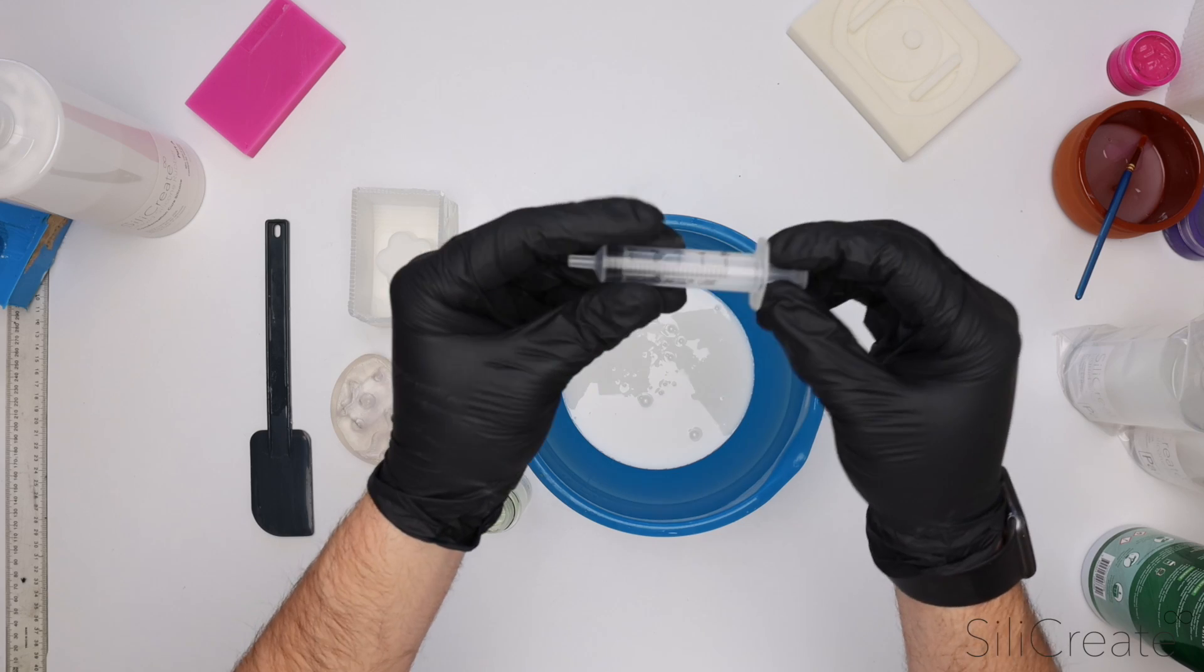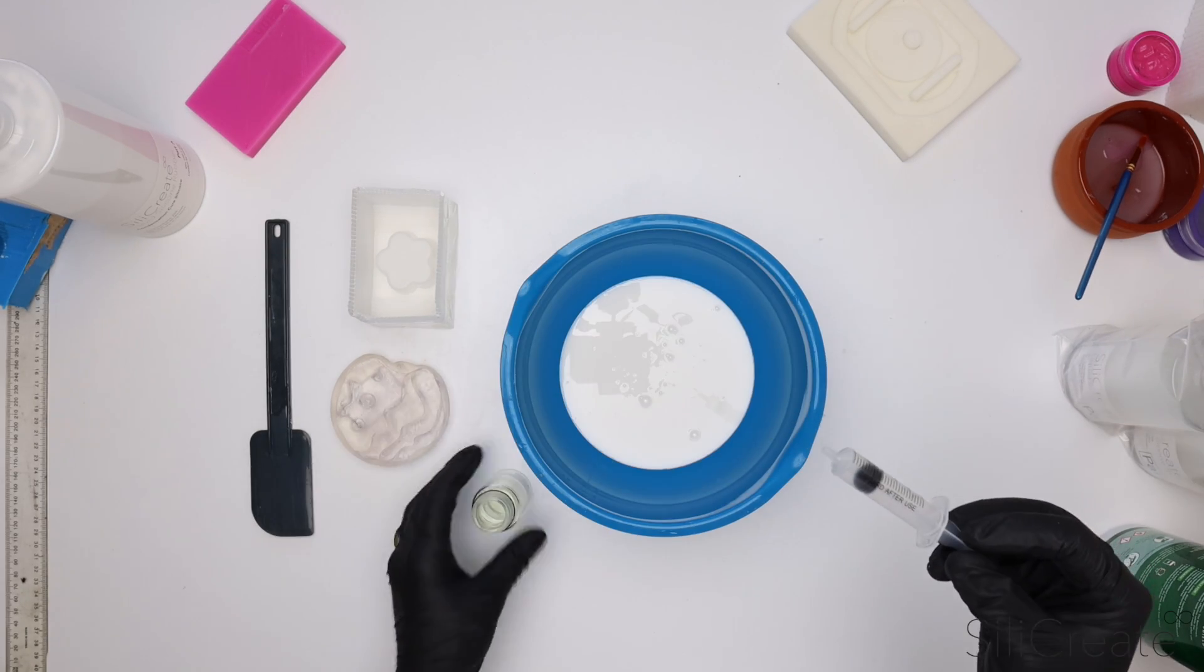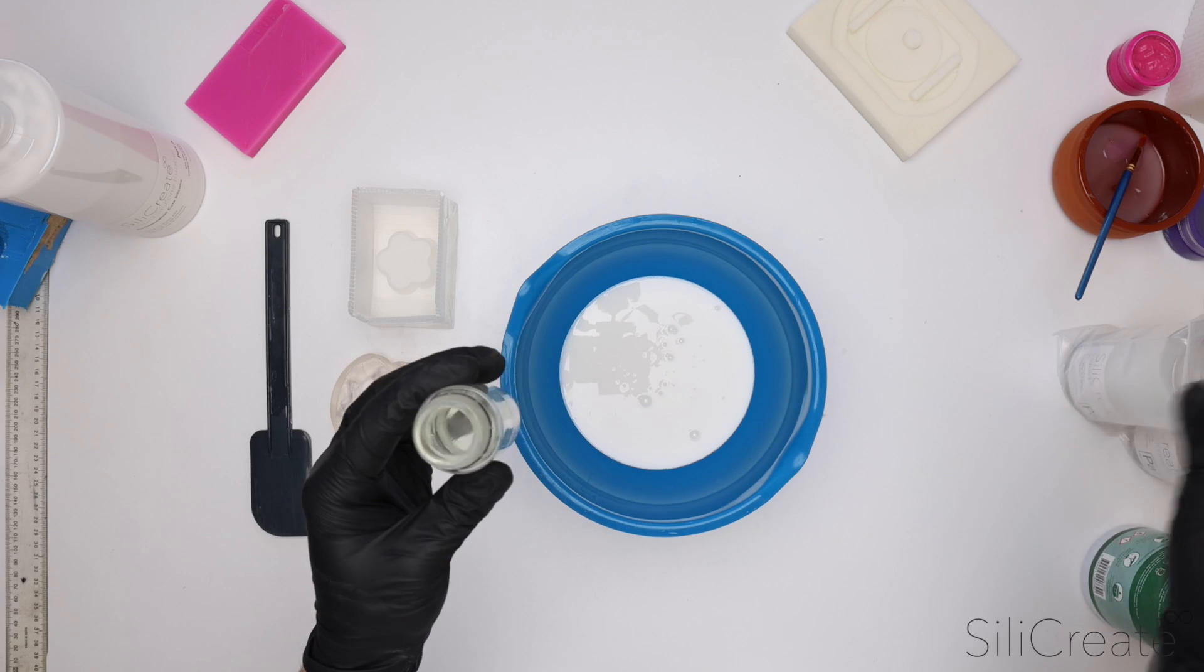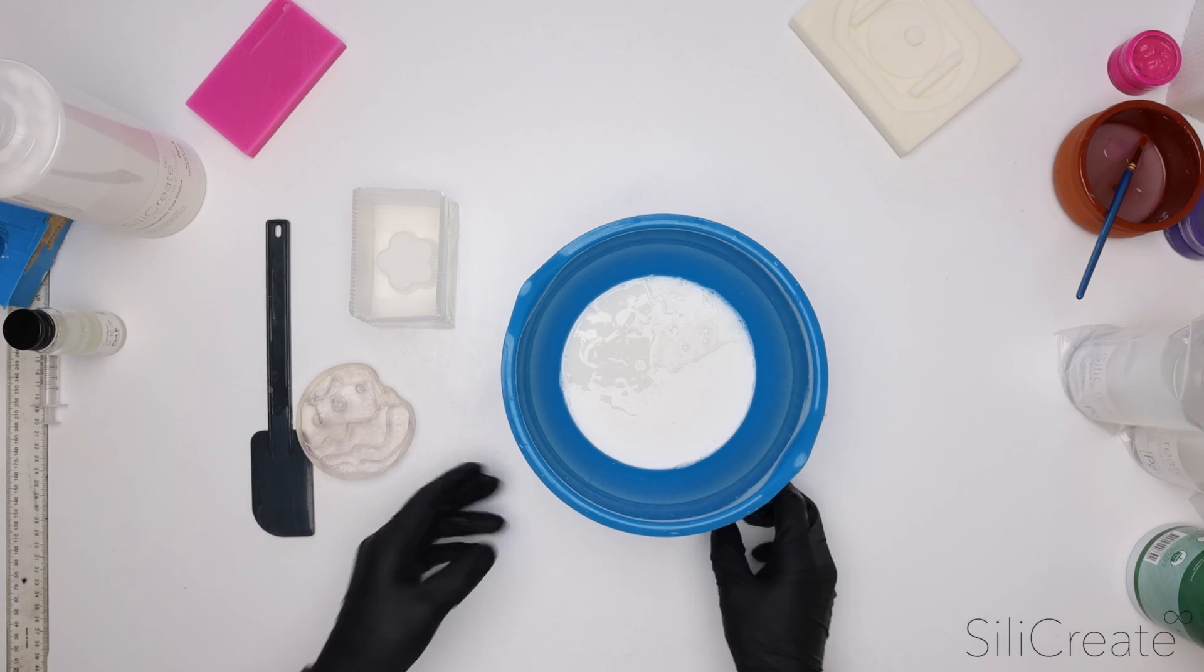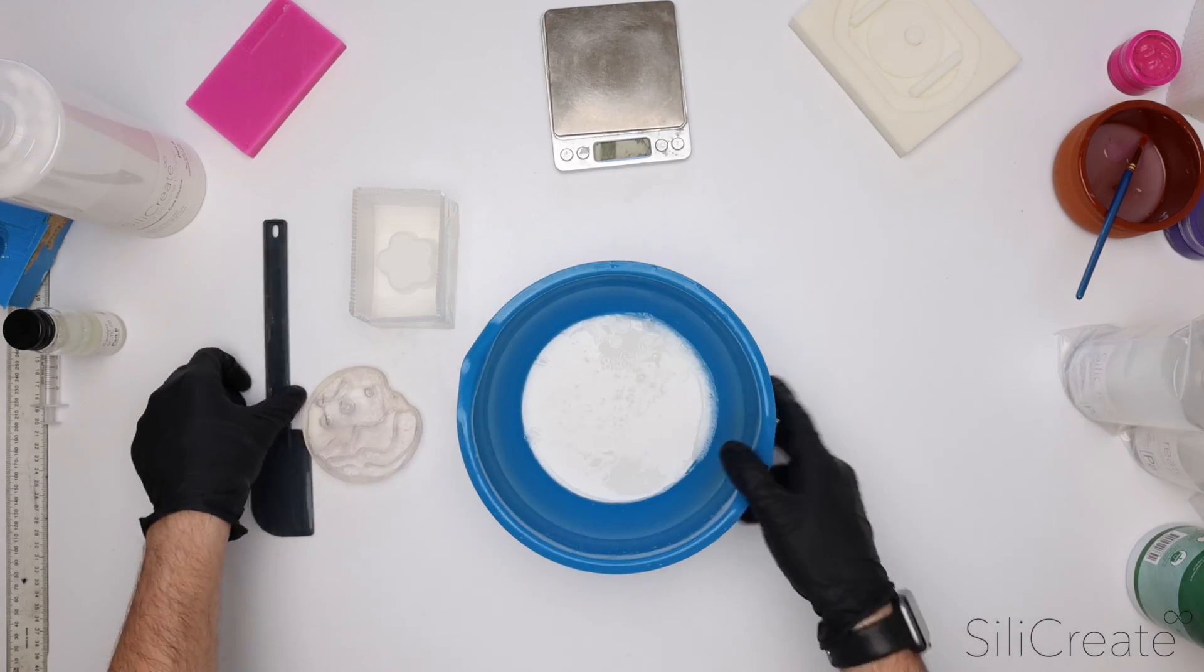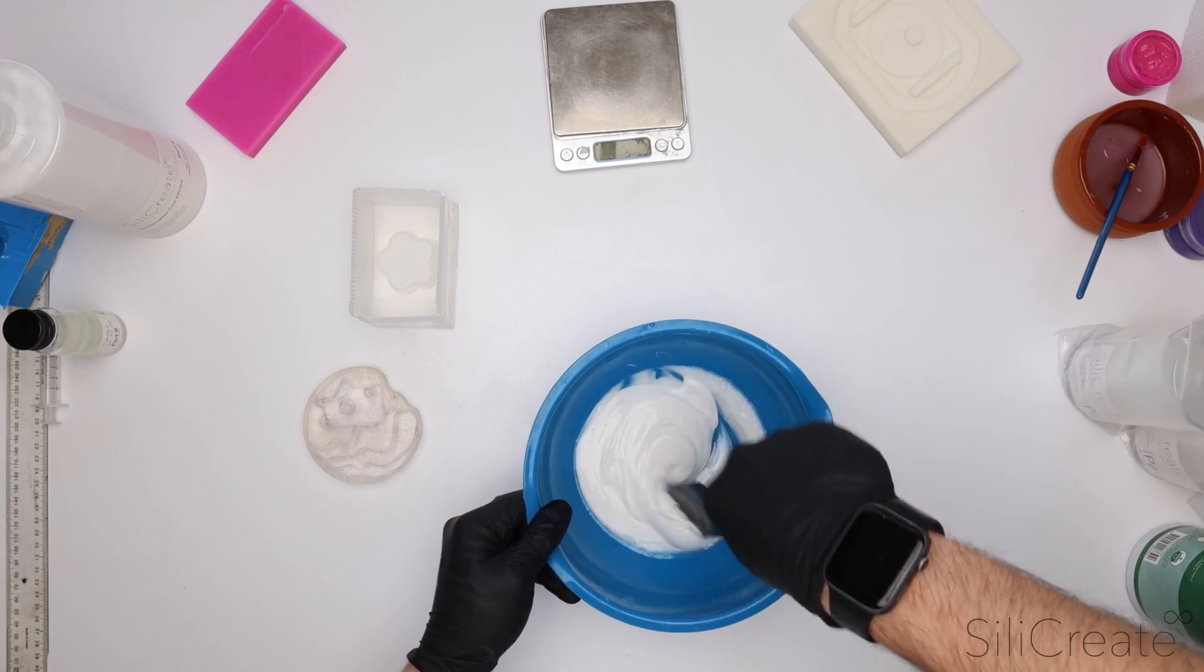We include these syringes in our kits. This just makes it way easier to pour out small amounts than trying to pour them out of these bottles. You get mess everywhere and it's really hard to get an accurate amount. So we've got about six grams in there now, and I'll just mix it up like you would with platinum cure. You just want to make sure that you incorporate all of the catalyst.